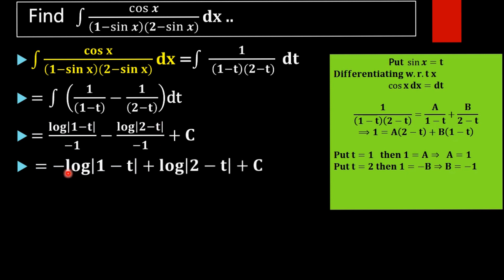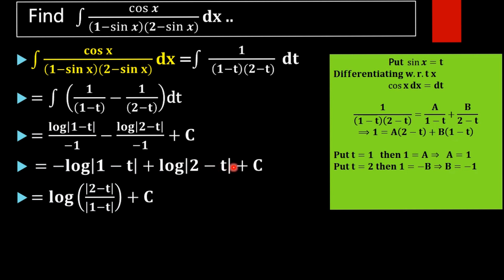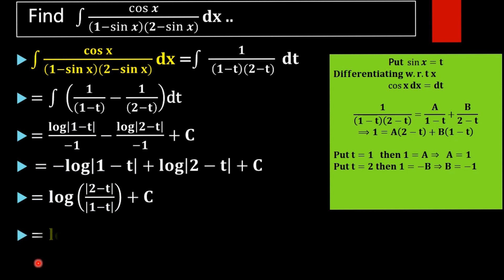This simplifies to negative log mod (1 minus t) plus log mod (2 minus t) plus C, which is of the form log A minus log B. Using the log rule, this equals log mod (2 minus t) divided by (1 minus t) plus C. Now substituting back t equal to sin x, the required result is: log mod (2 minus sin x) divided by (1 minus sin x) plus C.